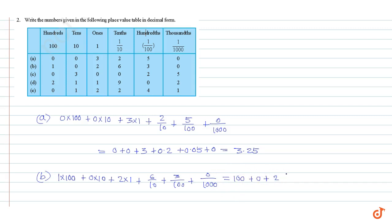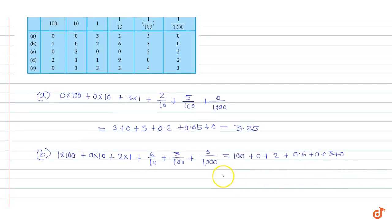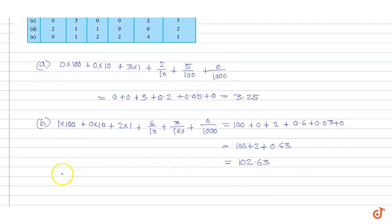This is equal to 100 + 0 + 2 + 0.6 + 0.03 + 0, which equals 102.63.